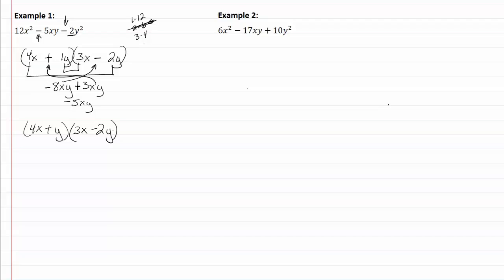So let's take a look at example two, start with my two sets of parenthesis. For my first term I have 6x², so I'm going to use 2x and 3x.